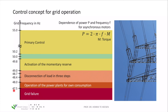If the frequency falls below 47.5 Hz, we have a full grid failure and must restart the grid from the very beginning, ramping up power plants from scratch. Normally, grid operation stays within the green band of ±0.2 Hz. In case of any deviation — mainly a frequency drop — the momentary reserve is activated and the grid is stabilized.